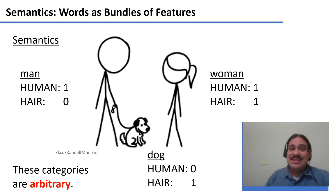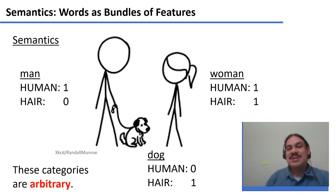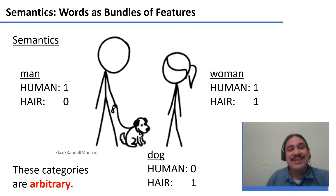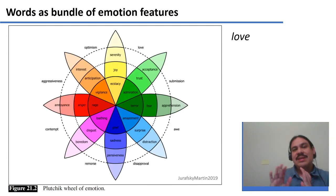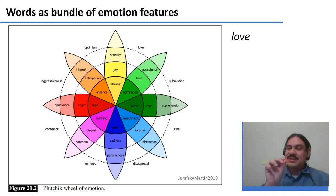In computer science we use binary systems because they match how our computers work. We can easily turn something like 'not human' or 'yes human' into a zero or a one. So a woman would have the value one for being human and one for having hair. A man would have one for being human and zero for having hair. Likewise, a dog would have zero and one. We have been using features to define words — now let's try to use them to assign emotions to words.